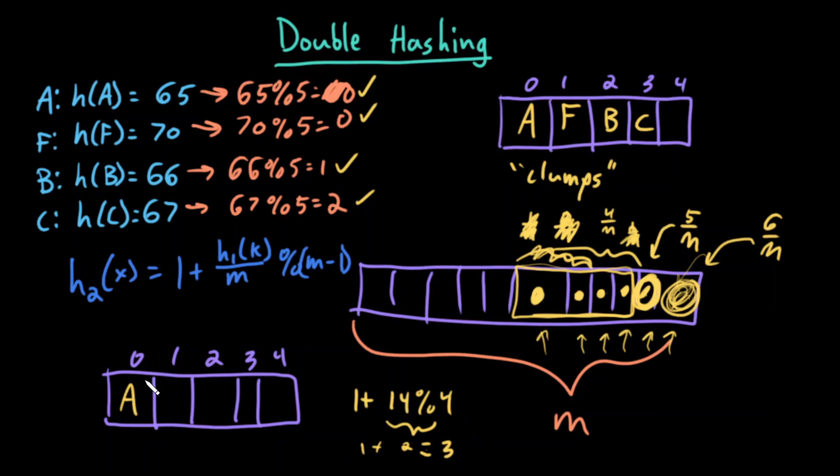This means that my skip is 3. Instead of going one position over, I'll jump three positions over. I encountered a collision. Instead of checking the next index, I'm 1, 2, 3 - oh, this one's empty. I'm going to insert here.